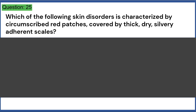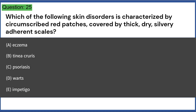Which of the following skin disorders is characterized by circumscribed red patches covered by thick, dry, silvery adherent scales? A. Eczema, B. Tinea cruris, C. Psoriasis, D. Warts, E. Impetigo. Answer: C.